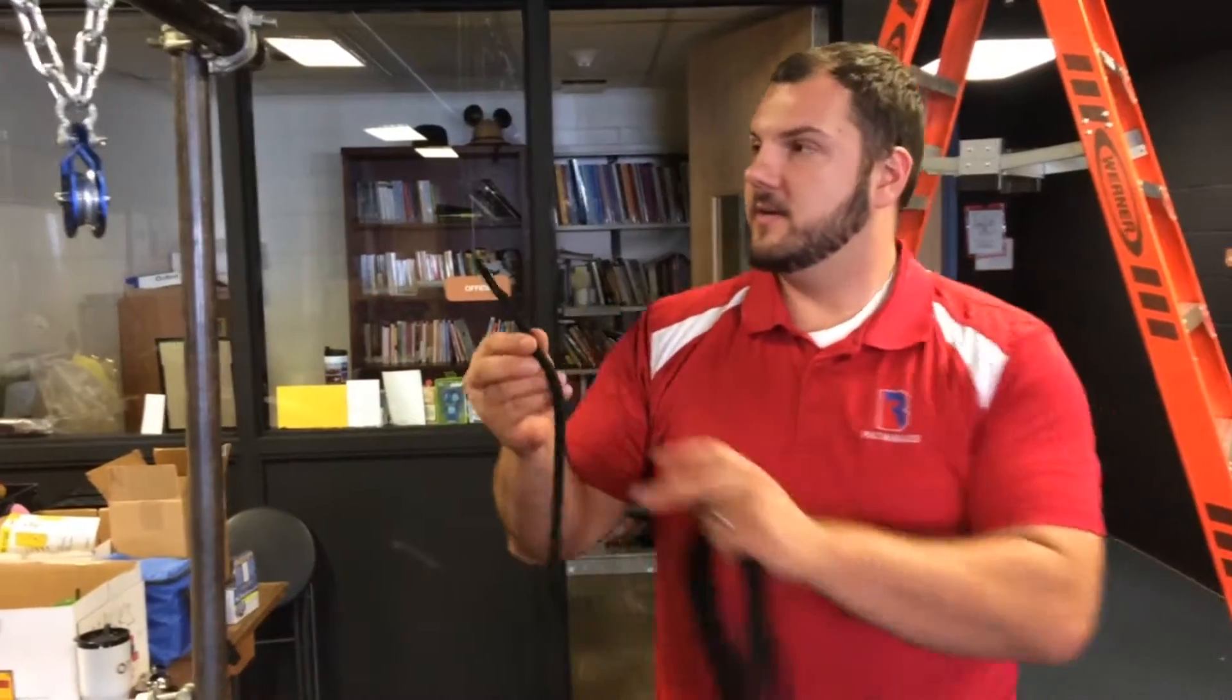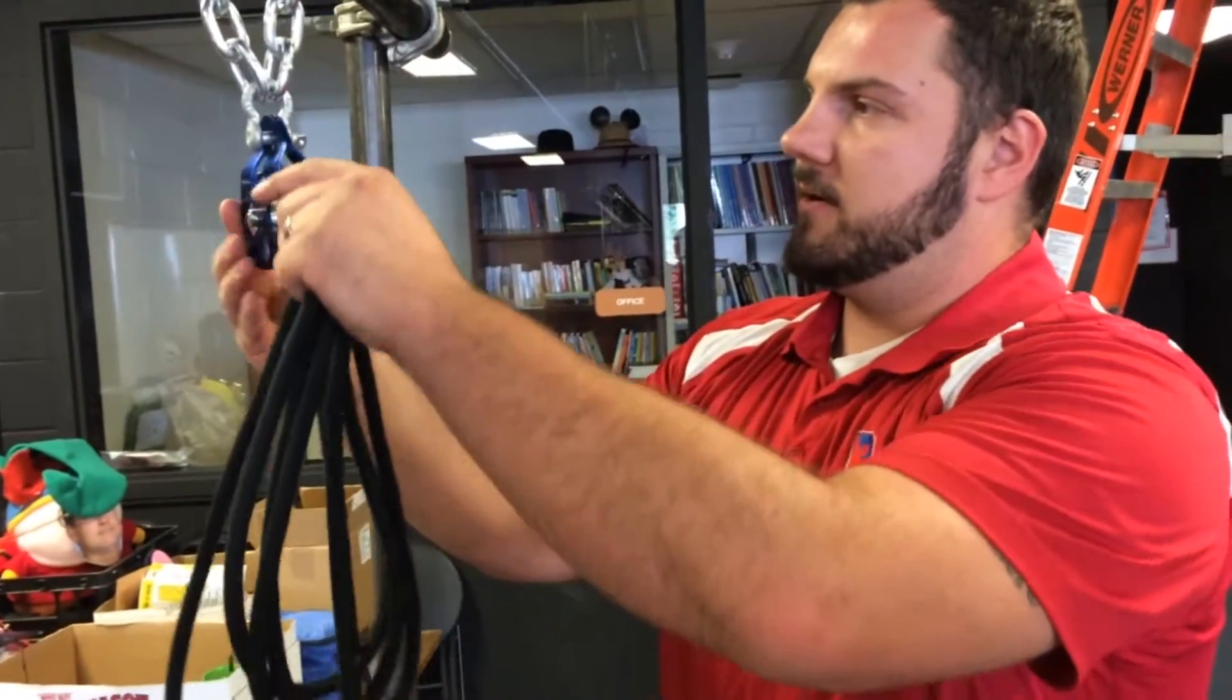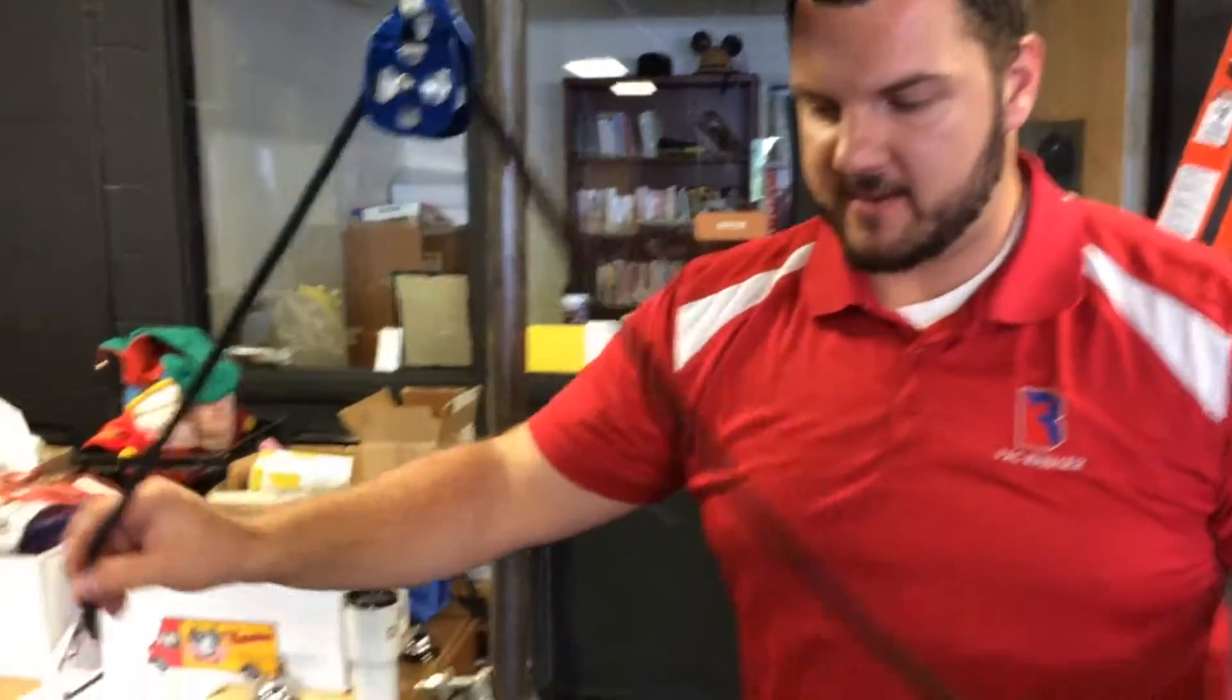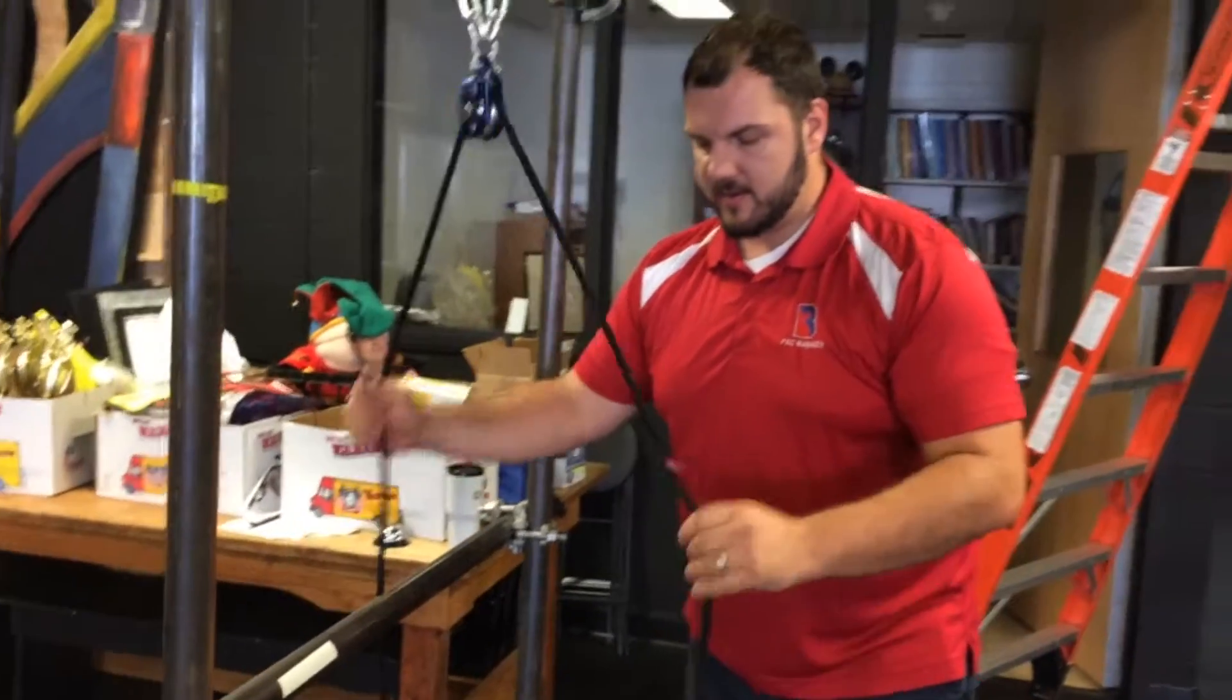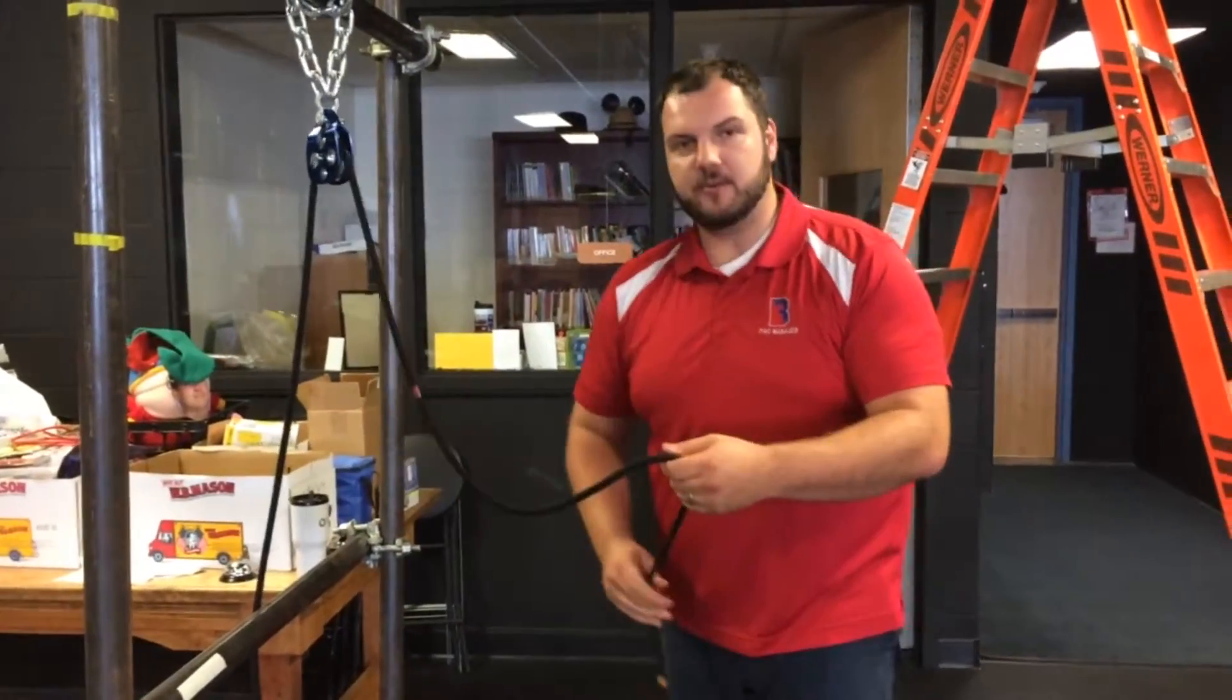Take your rope and feed it through the pulley, going from front to back. Go about halfway, leave it there, and prep for doing your bowline.